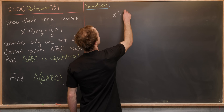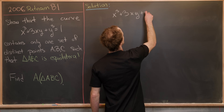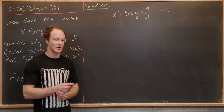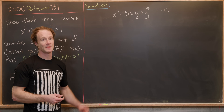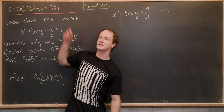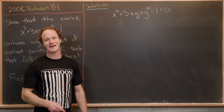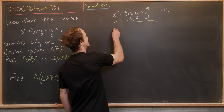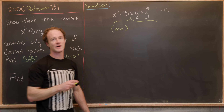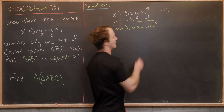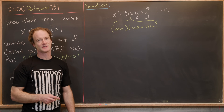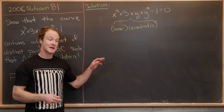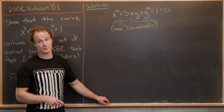Equivalently we want to describe the solution set to x³ + 3xy + y³ − 1 = 0. This solution set is going to be quite difficult to describe unless there's some simplification. A very nice simplification would be if this left-hand side could factor into a linear polynomial in two variables times a quadratic polynomial in two variables, because we know exactly what those solution sets look like.